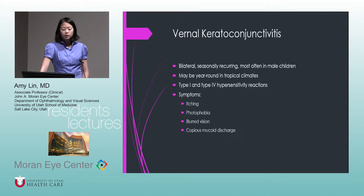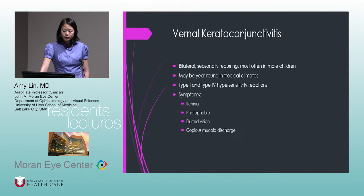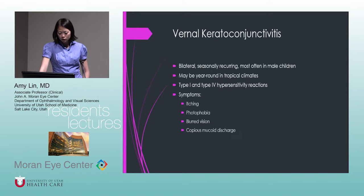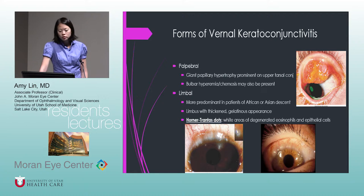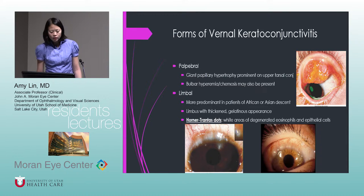Vernal keratoconjunctivitis is bilateral and seasonal, most often in male children, but can be year-round in tropical climates. This is type 1 and type 4 hypersensitivity. Symptoms include itching, photophobia, blurred vision, and copious mucoid discharge. The appearance is striking — on the palpebral conjunctiva there's almost a GPC-like look on the upper tarsal conjunctiva, and there may be some chemosis.